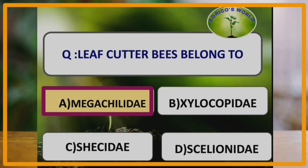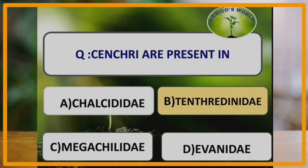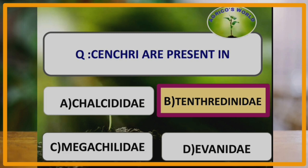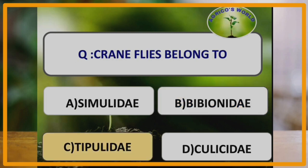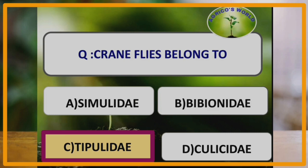Leafcutter bees belong to the family Megachilidae of the order Hymenoptera and suborder Apocrita. Sangri are present in Tenthredinidae, that is sawflies. In adult sawflies there is a pair of sangri in the metanotum.